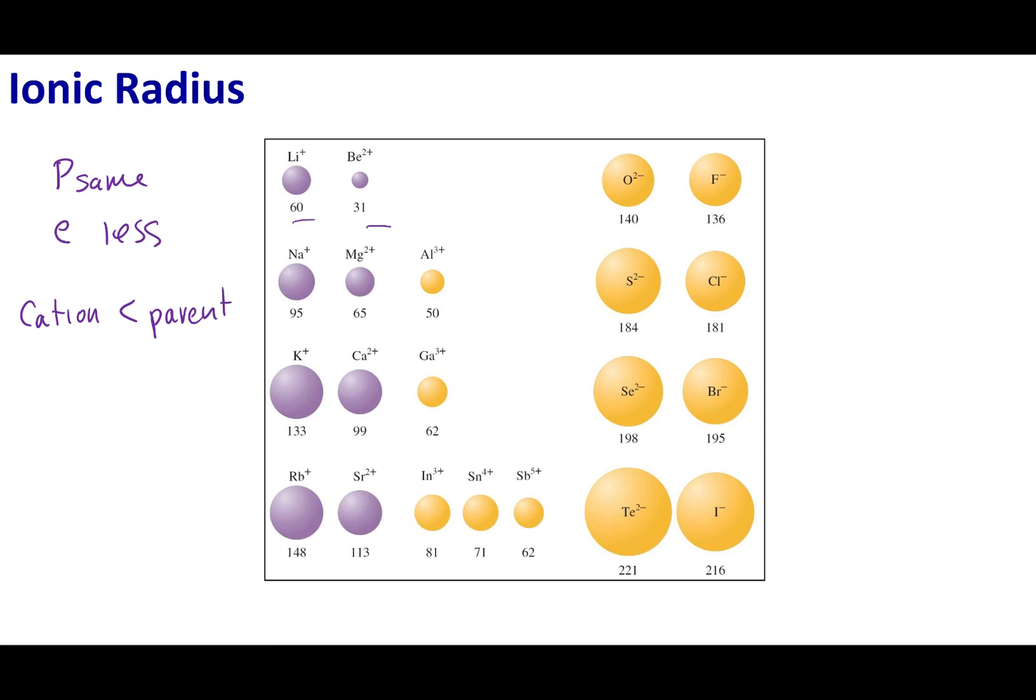What results is the cation is going to be smaller than the parent uncharged atom. The converse is true when I make an anion.